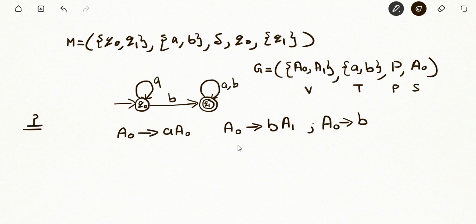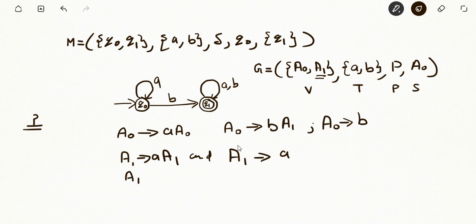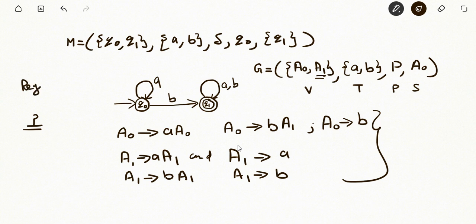Again, consider q₁ upon receiving a goes to q₁, and q₁ is the final state. So again we get two production rules corresponding to A₁: A₁ → a A₁ and A₁ → a. Again, q₁ upon receiving b goes to q₁, and q₁ is the final state. So A₁ → b A₁ and A₁ → b. In this way we construct the regular grammar for the given DFA.